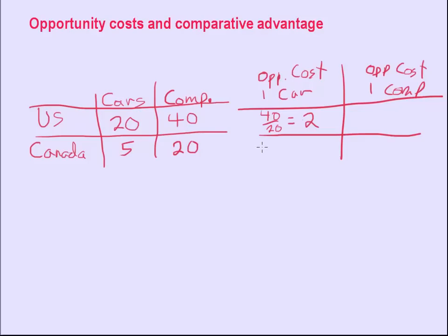In Canada, what is it? 20 divided by five. So every five cars they produce, they give up 20 computers. So the opportunity cost per car is going to be four. Oops, I said 50. You need to change that a little bit, don't I? There, 20 divided by five. Now, make sure you get your numbers right. Otherwise, you're going to miss the problem. That looks a little better to get four that way, doesn't it?